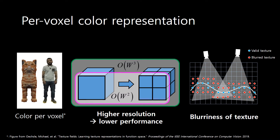The traditional online scanning methods have used per-voxel color representation to store texture information. However, the color quality is bounded by the voxel resolution, and also the stored texture has been blurred by the geometric discordance.